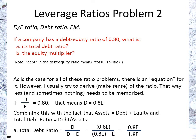You can see it doesn't matter what the actual value of equity is — whether it's 100 or 1,642,840. As long as we have the debt-to-equity ratio, we can calculate the total debt ratio. Here we get 0.44. So the actual monetary value of equity or debt doesn't matter.